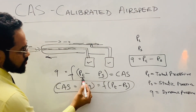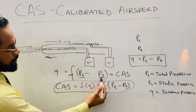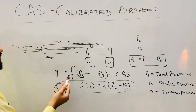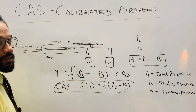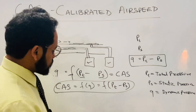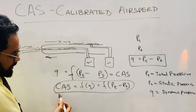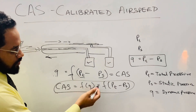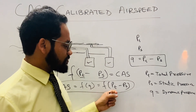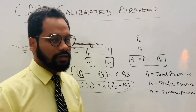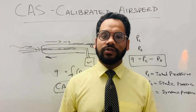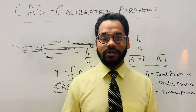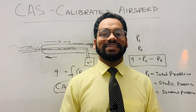Static pressure represents only the local pressure around the probe. The difference between total pressure and static pressure gives you the dynamic pressure, which is the Calibrated Airspeed. So Calibrated Airspeed is a function of dynamic pressure, or the function of total pressure minus static pressure. I hope you've enjoyed learning this topic — I'll come up with a new topic in my next session. Thank you!